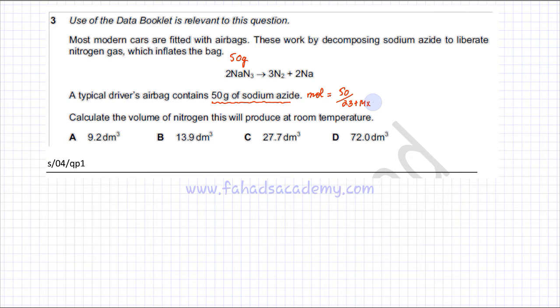Using my calculator, I'm going to try and find the moles of sodium azide. It's going to be 50 divided by 23 plus there would be 14 times 3. And that would give me 0.769 moles, divided to 3 significant figures. It's going to be 0.769 moles.